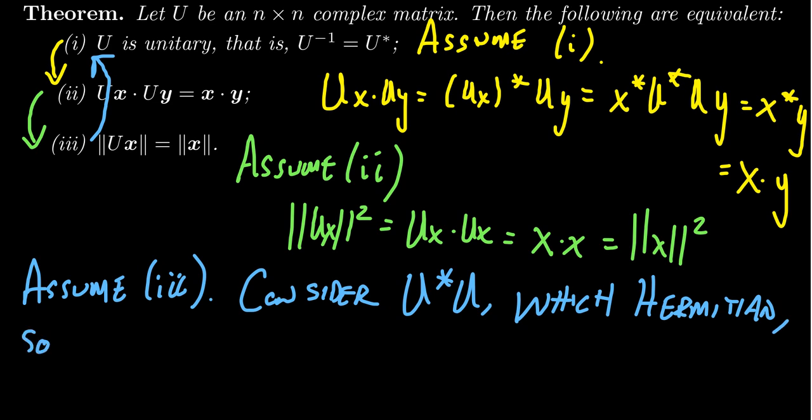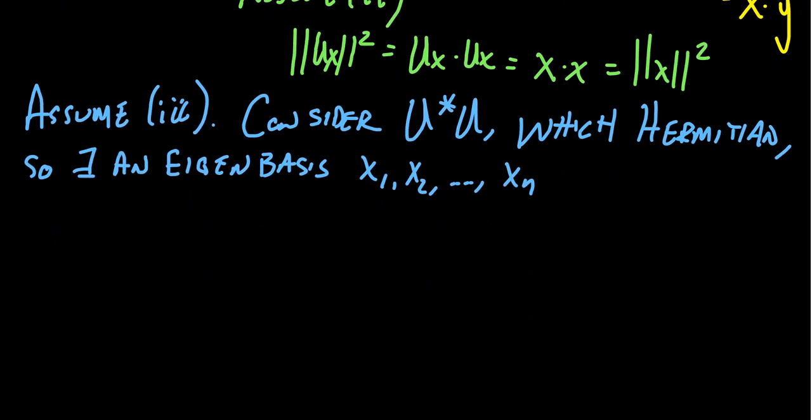Well, for Hermitian matrices, that means there exists an eigenbasis. An eigenbasis, some vectors x1, x2, all the way down to xn. So these are eigenvectors for the matrix U star U. So we can say something like the following. Say that U star U xi is equal to lambda xi. So we have a basis of C^n using eigenvectors for U star U.